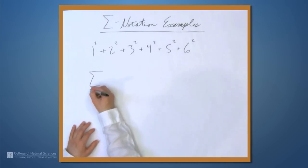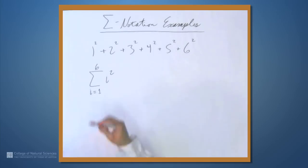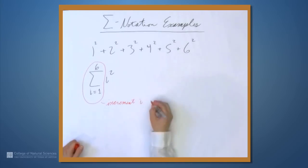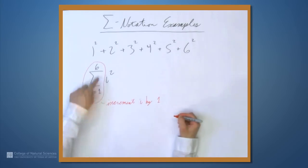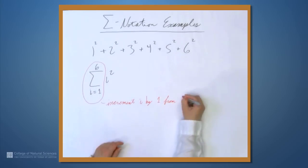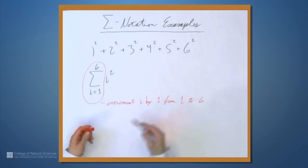And so we'll write sigma, and then under the sigma, i equals 1 to 6 of i². So what this means, this sigma part here means that we increment i by 1 from 1 to 6, and we add up all the results.